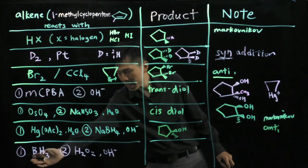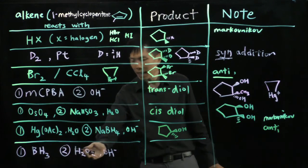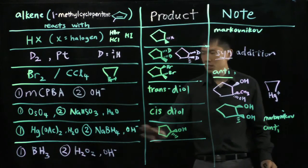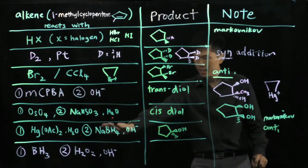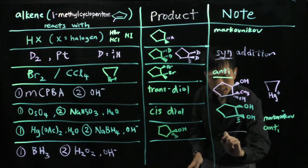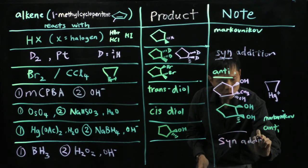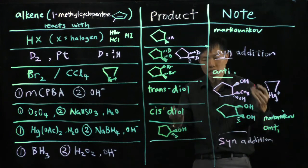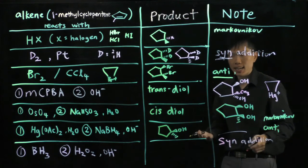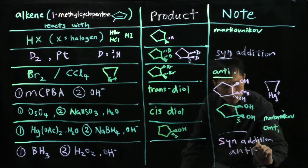For the last case, you have borane BH3 followed by hydrogen peroxide and hydroxide. So this comes as one set. Now when you see BH3, remind yourself that this is a syn addition. That means the incoming groups come from the same side. And especially for this, this is anti-Markovnikov rule.